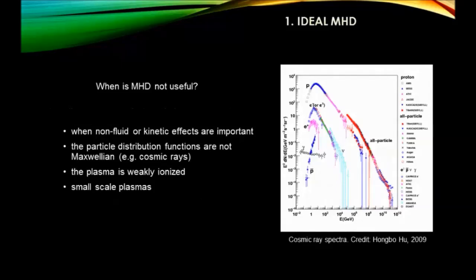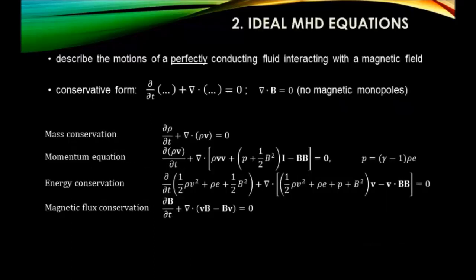With so many assumptions there are also topics where MHD is not useful, especially when kinetic effects are quite important. You cannot really use MHD anymore at very small scales - it breaks down there. Another example is when particle distribution functions are non-Maxwellian, for instance in cosmic rays, or where the plasma is weakly ionized.